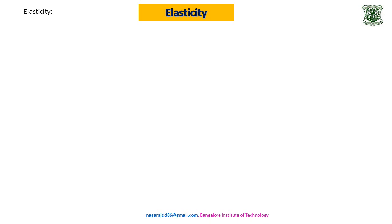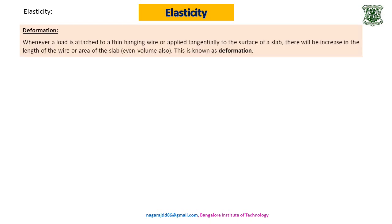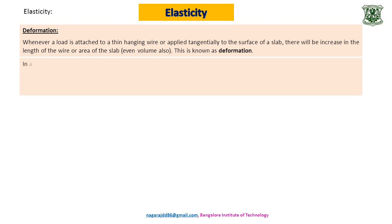What is deformation? Whenever a load is attached to a thin hanging wire, or applied tangentially to the surface of a slab, there will be an increase in the length of the wire, the area of the slab, or even the volume. This change in dimension is known as deformation. Whenever you apply a load on a wire or apply force tangentially to a surface, there will be an increase in dimensions — this is deformation.